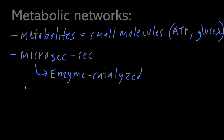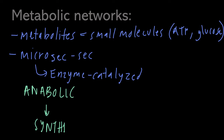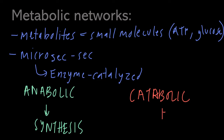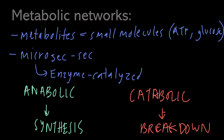Metabolic networks can be further classified as either anabolic, which results in net synthesis, or catabolic, which results in breakdown. As an example, in glycolysis you get breakdown or catabolism of glucose. One of the byproducts of this process is ATP, and ATP as a source of energy can be used as an input into anabolic processes to get synthesis of some new chemical species.